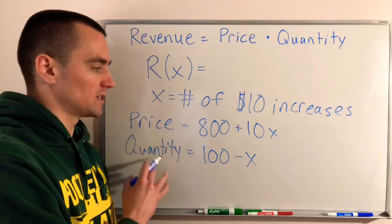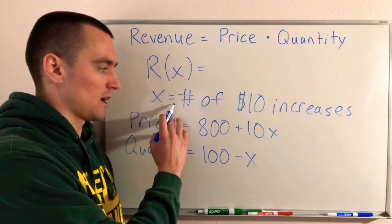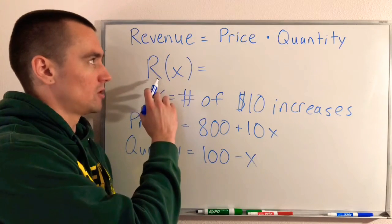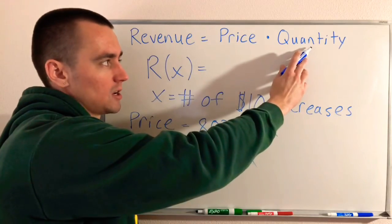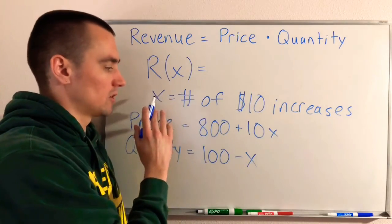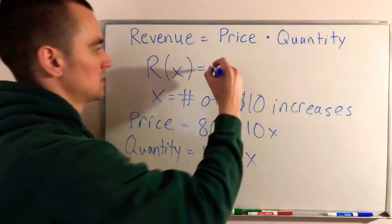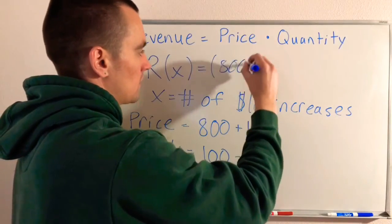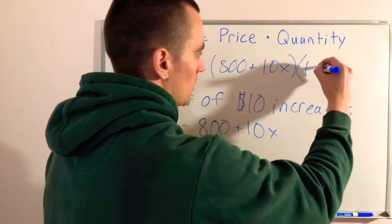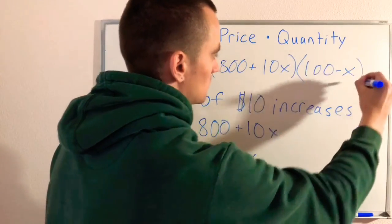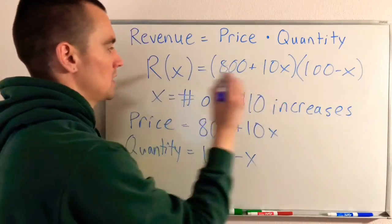These are our equations for price and quantity in terms of X. To get our revenue equation, we can just do our price equation times our quantity equation. That gives us R(X) = (800 + 10X)(100 - X). Price times quantity gives us our revenue.